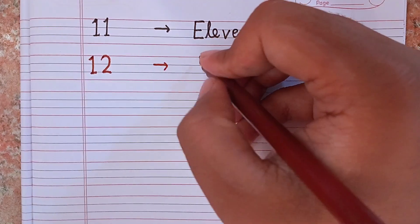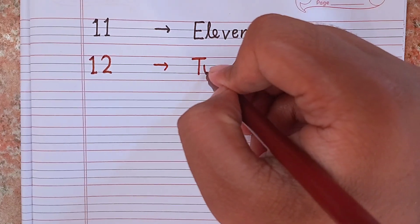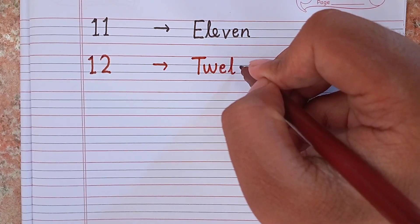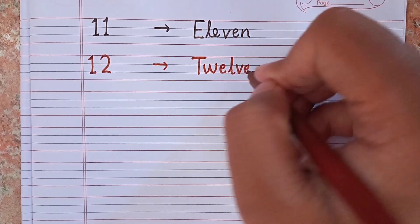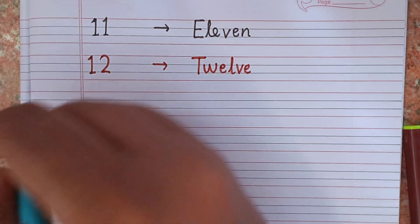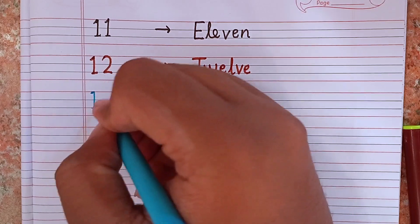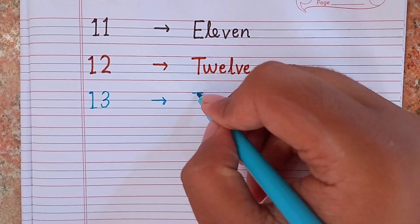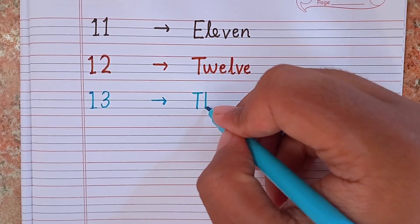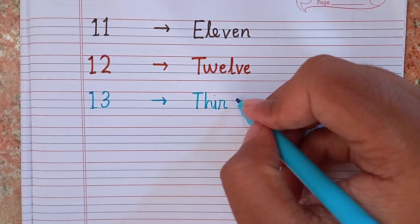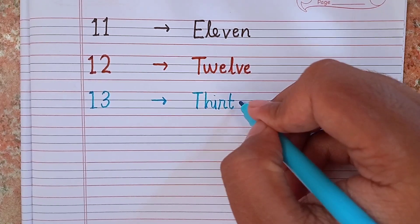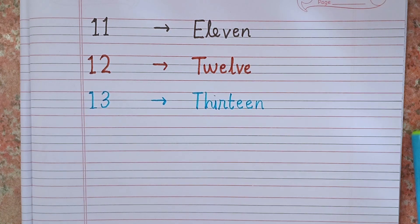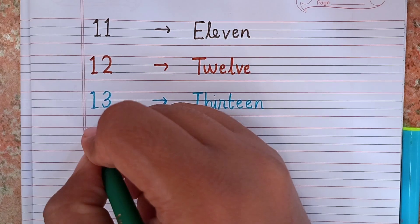The spelling of 12 is T W E L V E. After 12, I am writing 13. Now I am writing 13 and the spelling of 13 is T H I R T E E N. Remember the spelling T H I R T double E N.